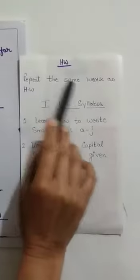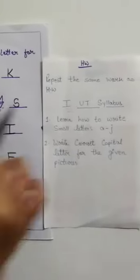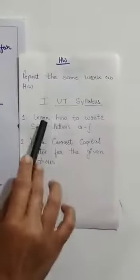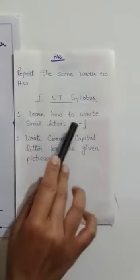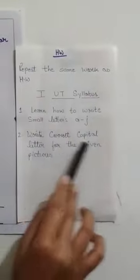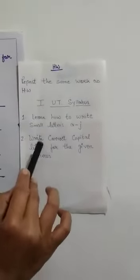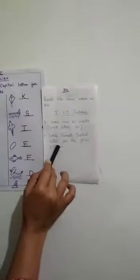Repeat the same work as homework. First UT syllabus: learn how to write small letters A to J. Second, write correct capital letters for the given pictures. These two topics are for your first UT syllabus. Thank you.